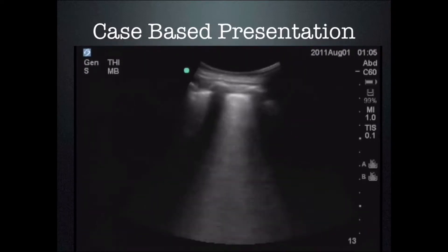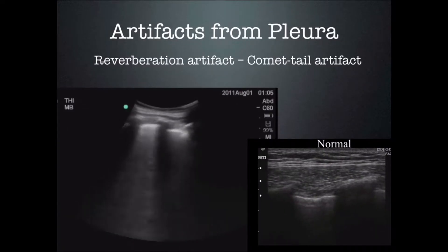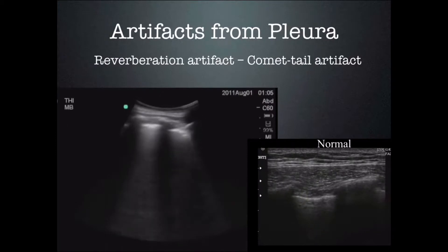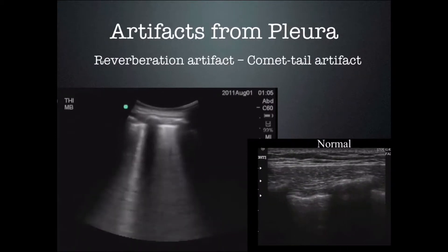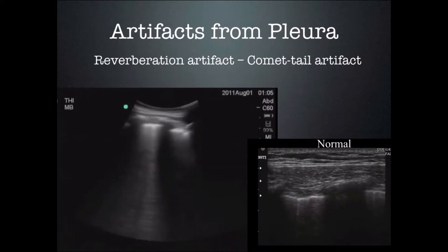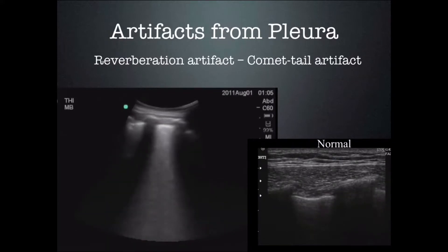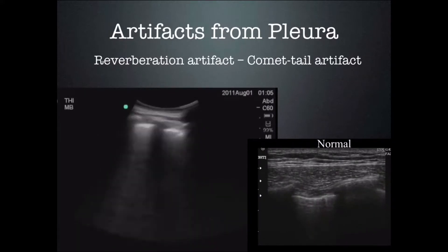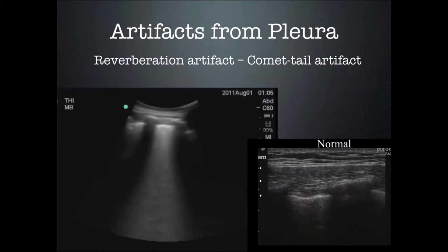What is this artifact? This is called a reverberation artifact. It is also called a comet tail artifact, and it is also called B-lines. Generally, I would prefer you learn that this is a reverberation artifact and it is indicative of an air-fluid interface, generally on a microscopic level.